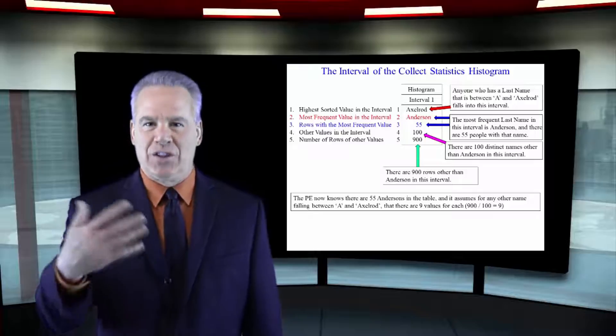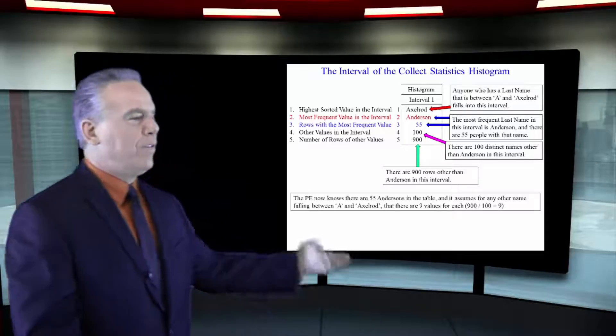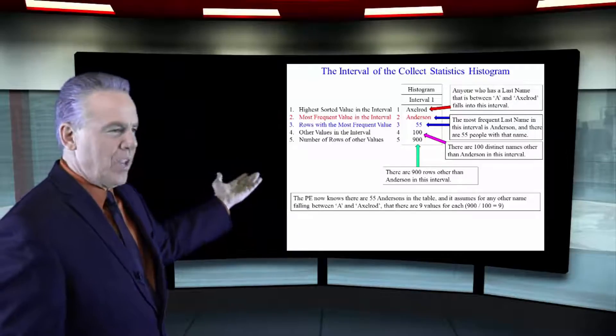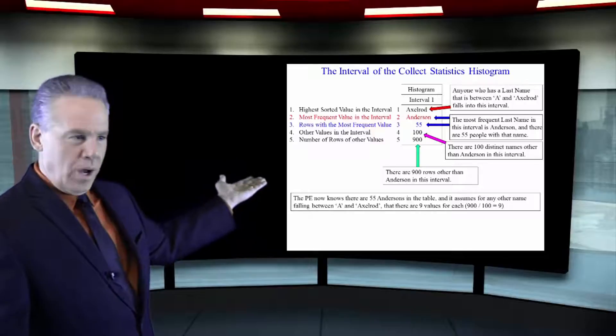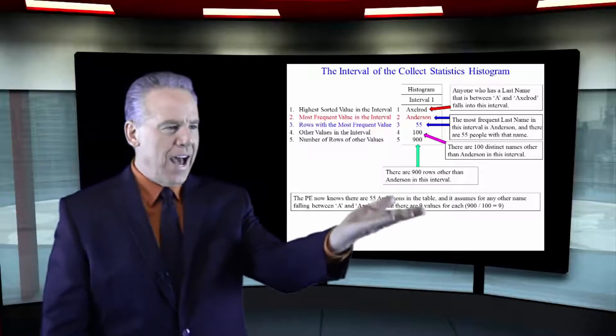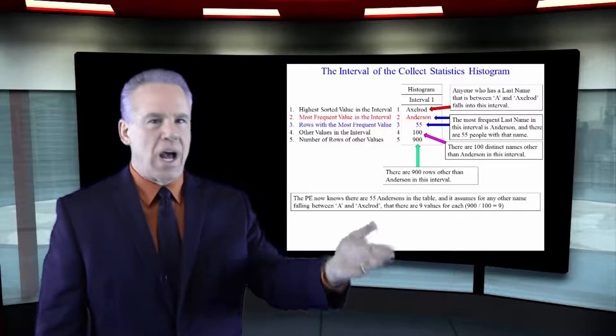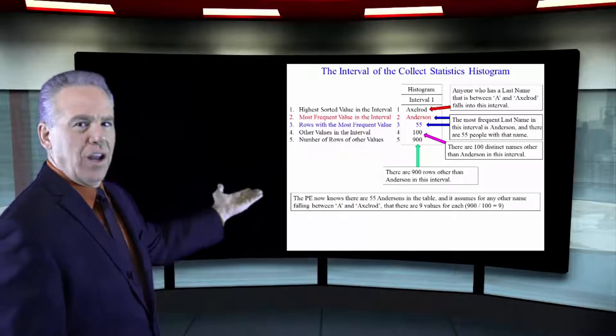Here's a picture of a histogram, and we've done last names. As you can see in interval one, we see five different rows: Axelrod, Anderson, 55, 100, and 900.